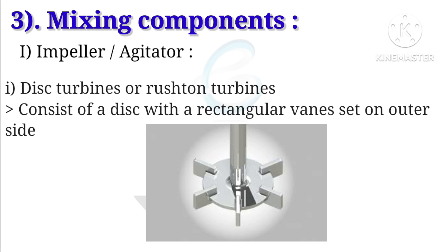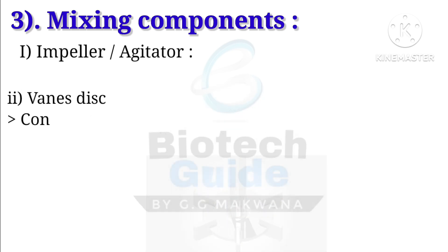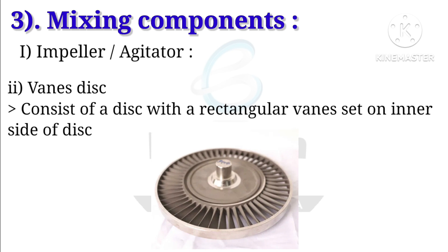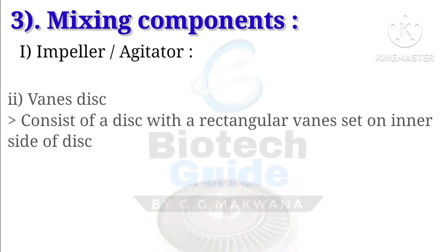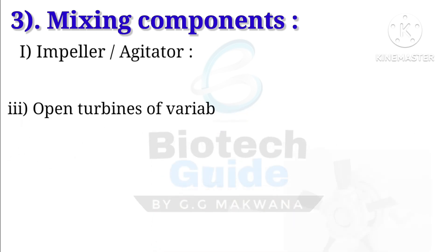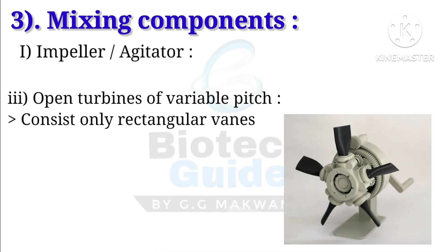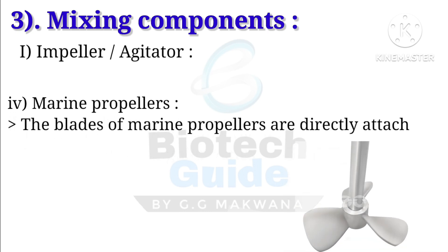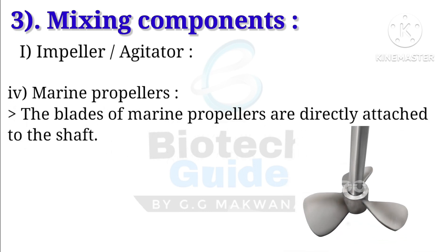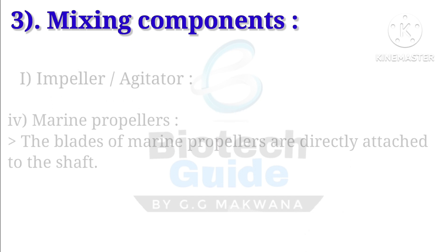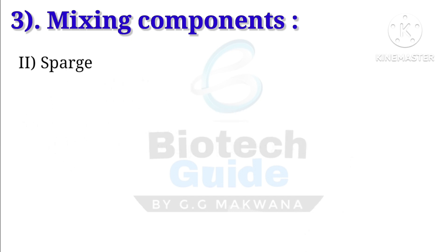The second type is vane disc, which consists of a disc with rectangular vanes set on the inner side of the disc. Third are open turbines of variable pitch, which consist only of rectangular blades. Then there is the marine propeller, where the blades are directly attached to the shaft.